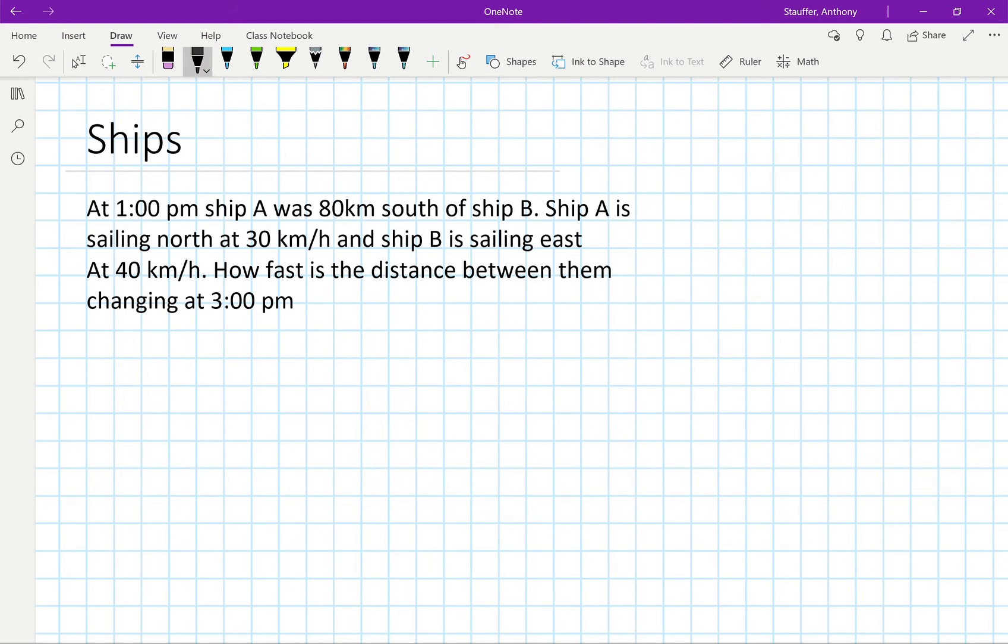We're going to start off with two states in this problem: when it's 1 pm and when it's 3 pm. At 1 pm, ship A was 80 kilometers south of ship B. So we have B right here, and then all the way south of this we have A, and originally that's 80 kilometers.